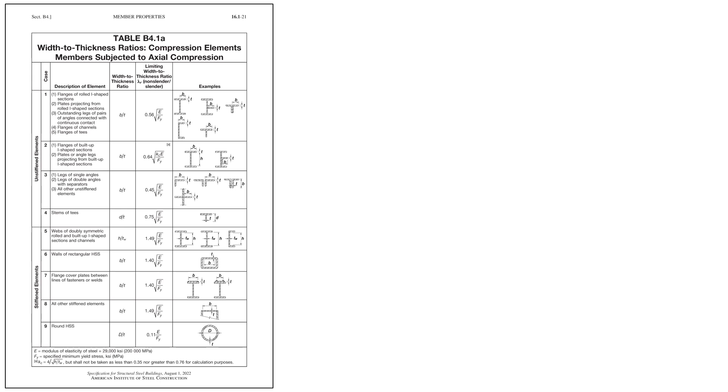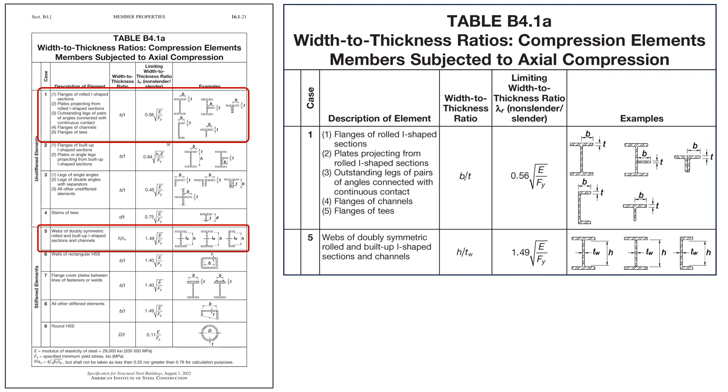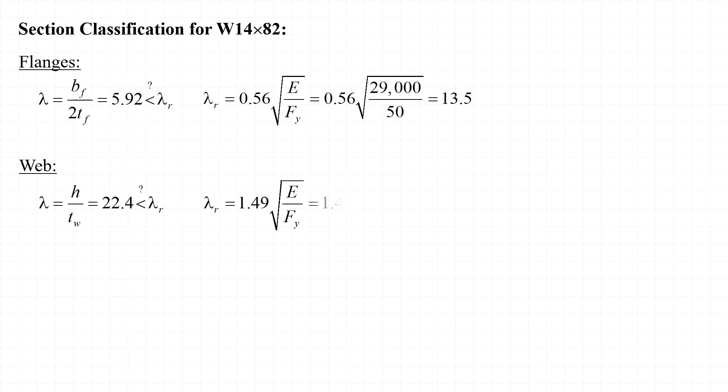The limiting values of lambda R are found in table B4.1A of the AISC specification. Case 1 applies to the flanges and case 5 applies to the webs of rolled I-shaped sections. Zooming in a bit, we see that lambda R equals 0.56 times the square root of E over F sub Y for the flanges and that lambda equals 1.49 times the square root of E over F sub Y for the web. We can now calculate values for lambda sub R and find that lambda sub R is equal to 13.5 for the flanges and 35.9 for the web. Thus, we can determine that the flanges and the web are non-slender for steel with a yield stress of 50 KSI. In fact, in this case, the flanges would be non-slender for steels with F sub Y up to 259 KSI and the web would be non-slender for steels with F sub Y up to 128 KSI.